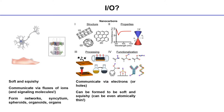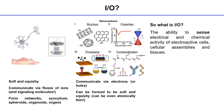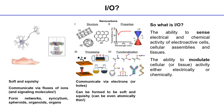On the solid-state end of the interface, we have this handful of allotropes of carbon. We can control their optical and electrical properties — they communicate via electrons or holes. We can form or attain them via different synthetic routes and modify their surfaces using different chemistries for downstream applications. IO, for my end, is the ability to sense electrical and chemical activity of electroactive cells, cellular assemblies, and tissues, or to modulate cellular or tissue activity either electrically or chemically.